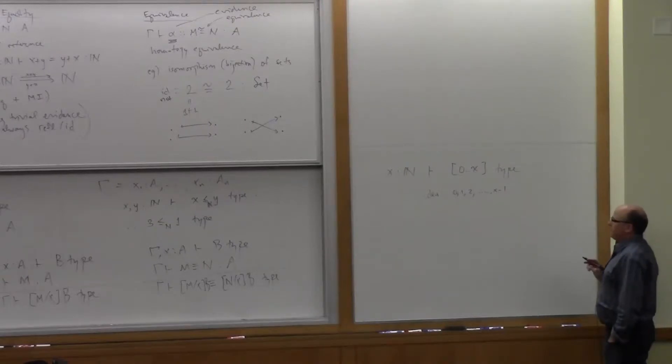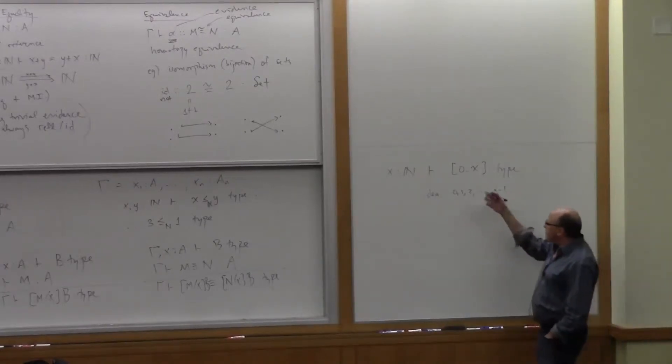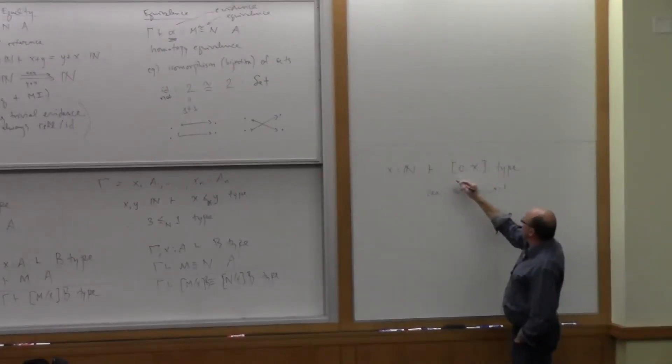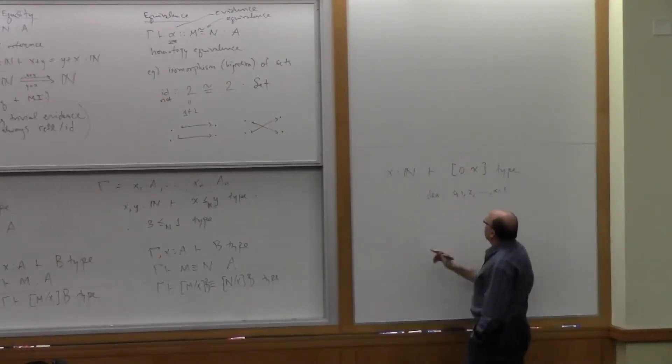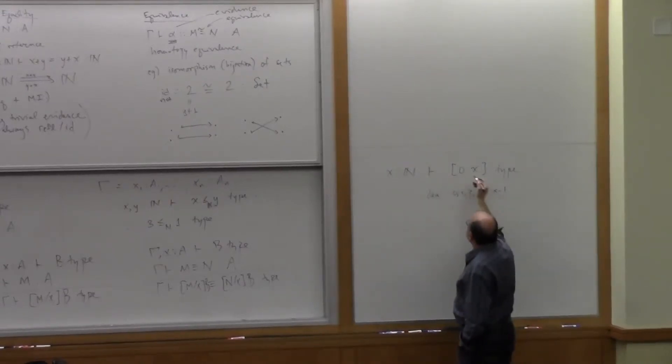So people have tried to do this. These are sometimes called sub-range types or various things like this. So the critical idea is that, or you can think of it as a predicate. You can think of this as expressing the predicate that you're expressing a predicate.